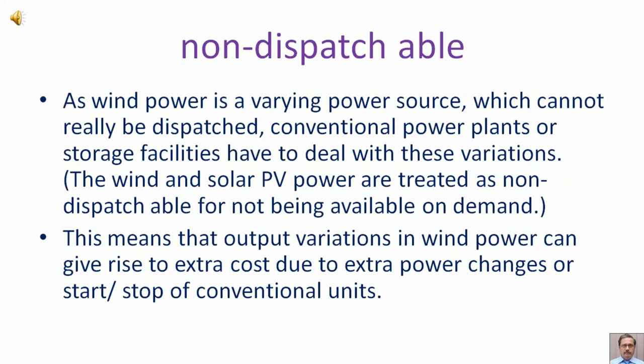As wind power is a varying power source which cannot really be dispatched, conventional power plants or storage facilities have to deal with these variations. Wind and solar photovoltaic power are treated as non-dispatchable for not being available on demand. This means that output variations in wind power can give rise to extra cost due to extra power changes or start and stop of conventional units.